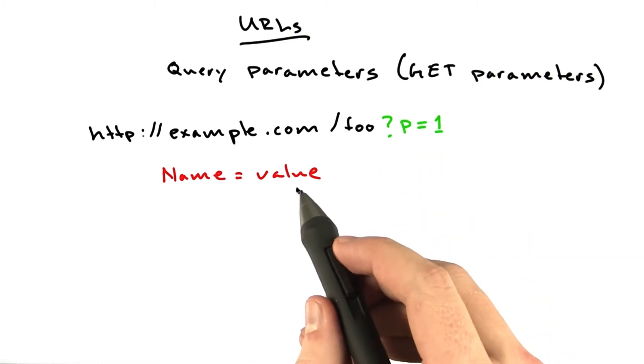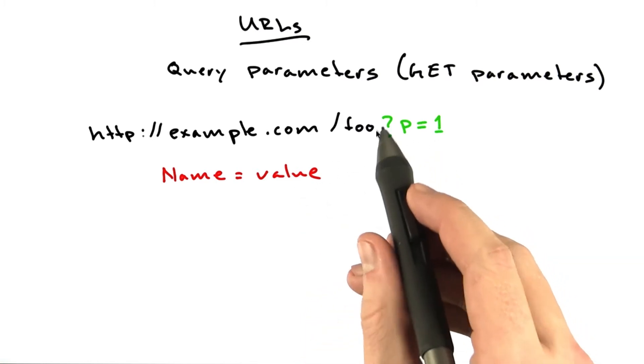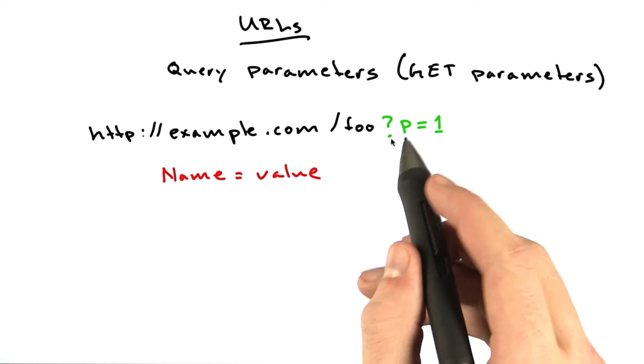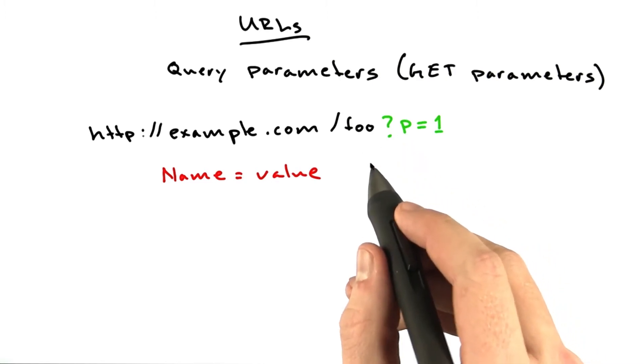The value can be just about anything, but it's good not to use question marks or other URL characters, although you could if you really wanted.